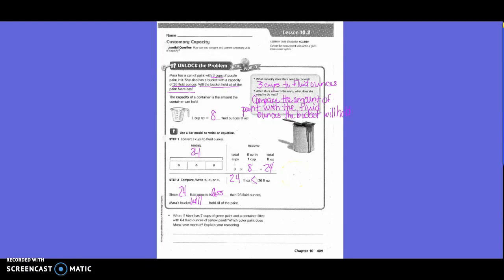What if Mara has seven cups of green paint and a container filled with 64 fluid ounces of yellow paint? Which color of paint does Mara have more of? Explain your reasoning. We need to draw our line because what do we need to do? We already converted three cups of purple to 24 ounces, right? What do we need to do next?